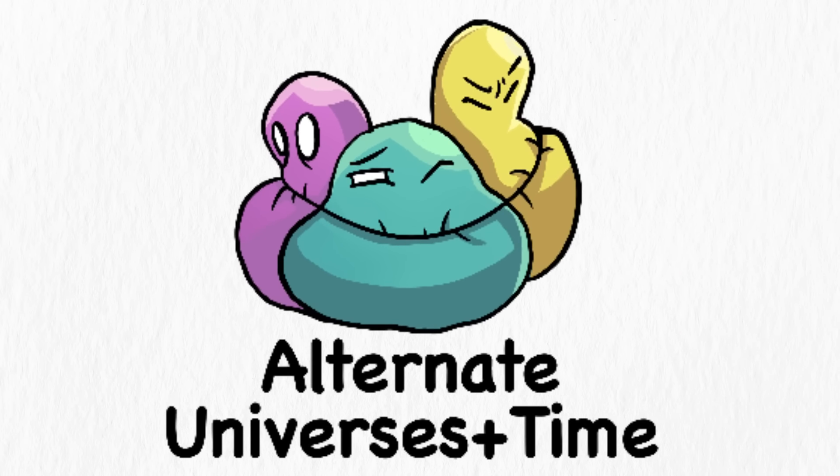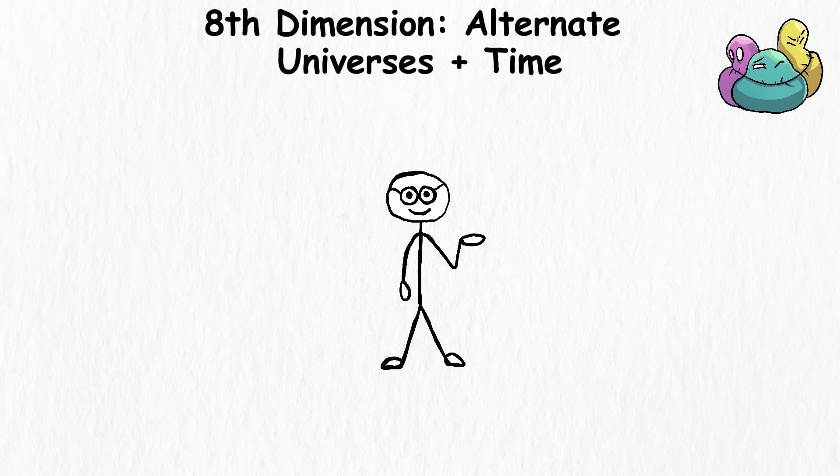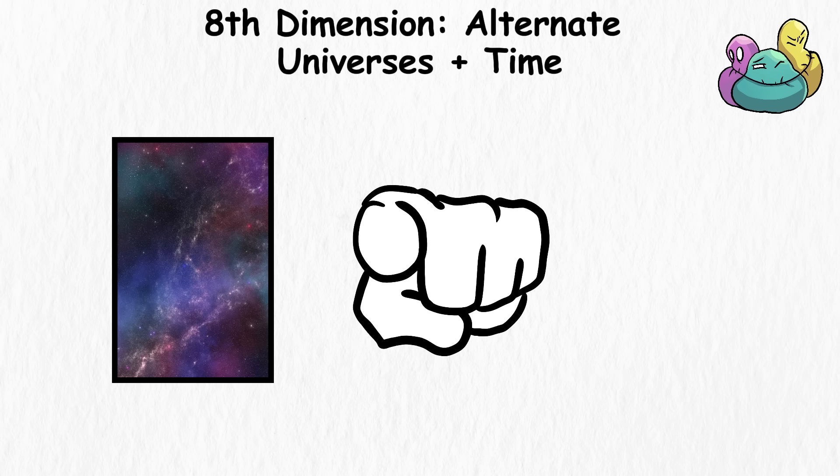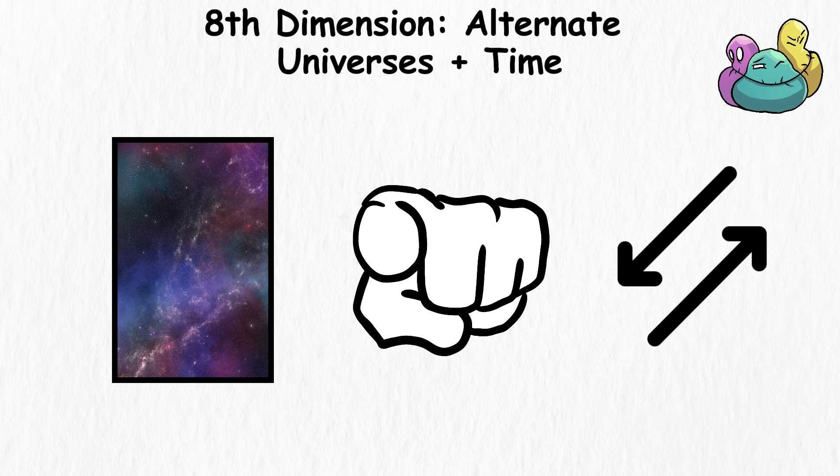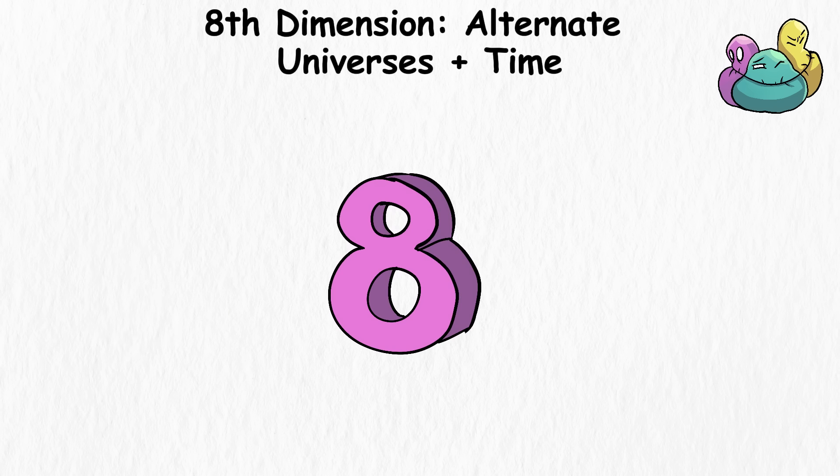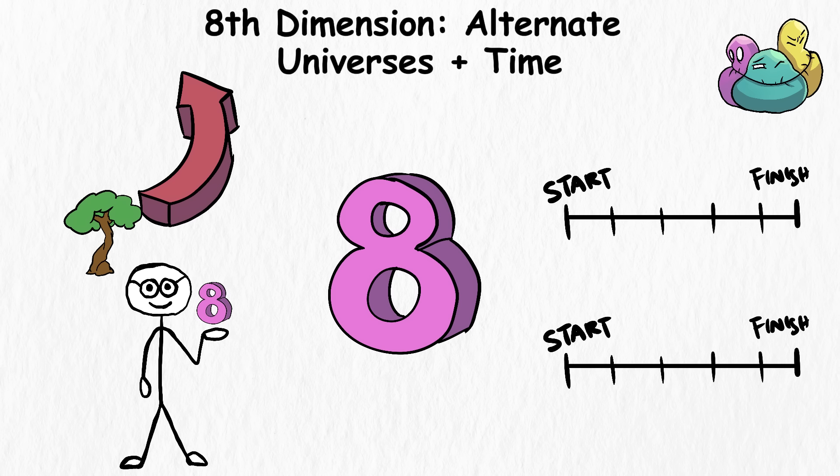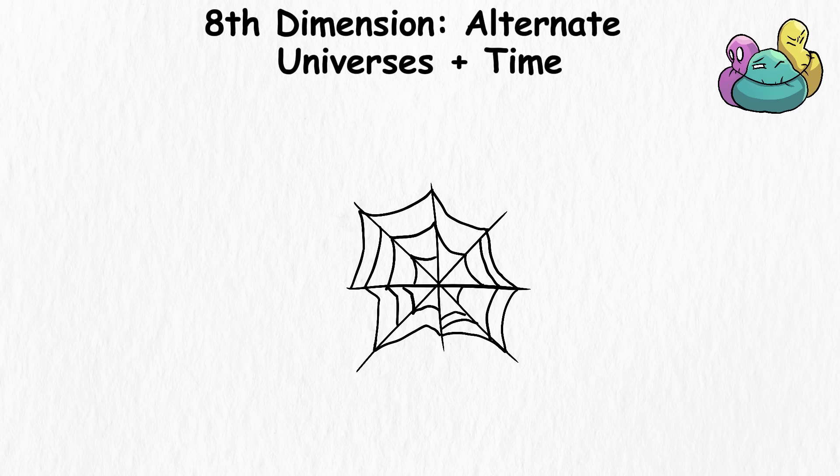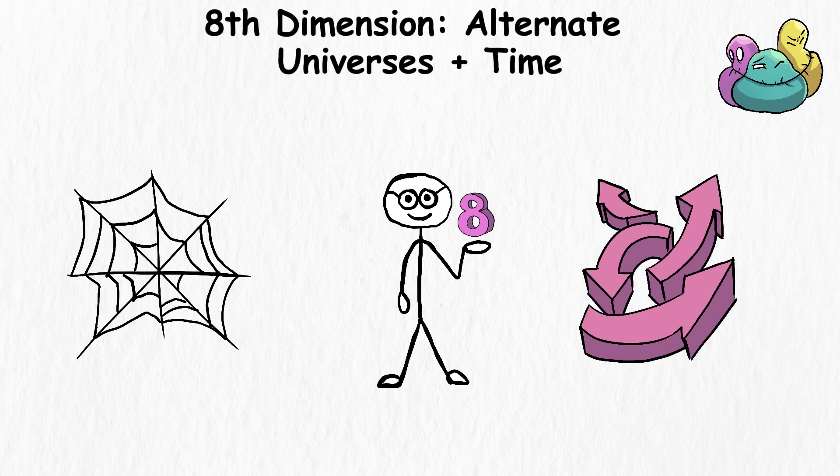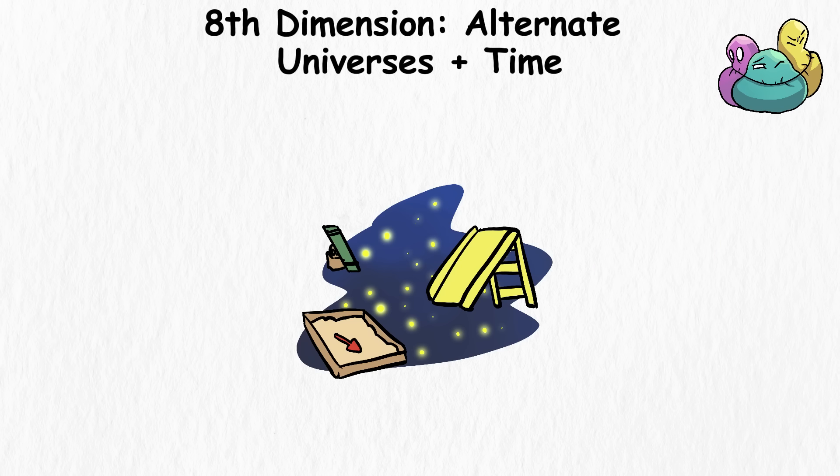Eighth dimension. Alternate universes plus time. When we talk about the seventh dimension, we're looking at a tree of possibilities, where every timeline and universe is right in front of you, happening simultaneously, but in different universes with their own set of rules, events, and realities. But in the eighth dimension, we go beyond just these different universes branching out. Instead, the eighth dimension talks about how these timelines could interact with each other, creating a complex web of possibilities. Simply put, the eighth dimension goes beyond all of the possible timelines, and how they interact with one another in a vast cosmic playground.